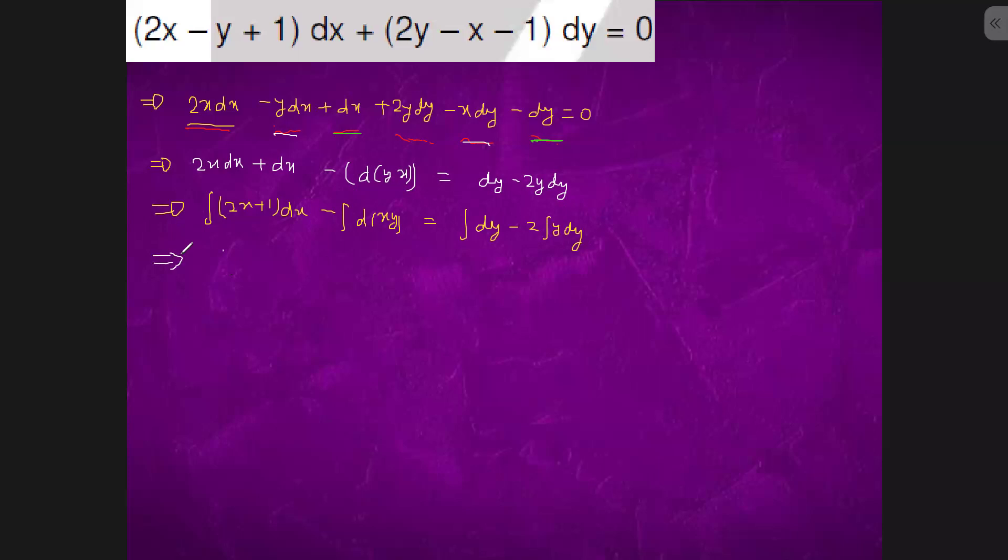2x dx is x squared plus x. This is xy. This is y. This is minus y squared plus c.